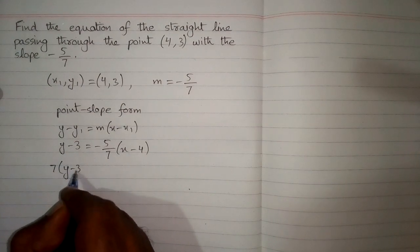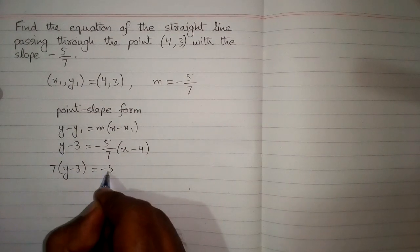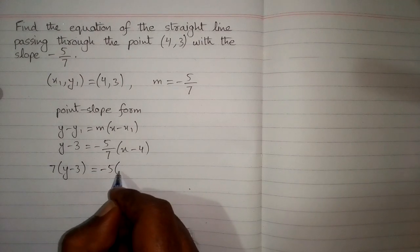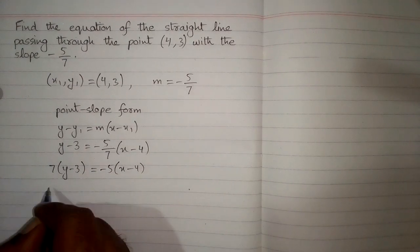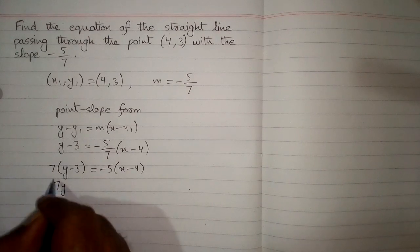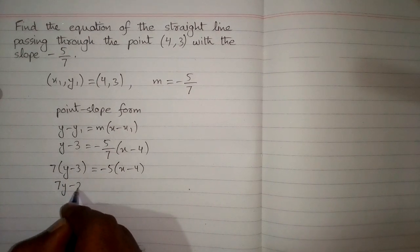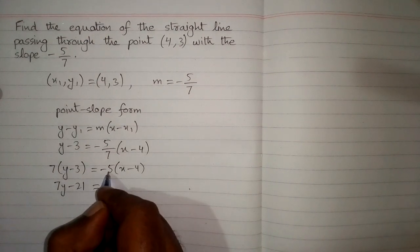minus 4). Now 7 times y is 7y, and 7 times -3 is -21. -5 times x is -5x, and -5 times -4 is +20.